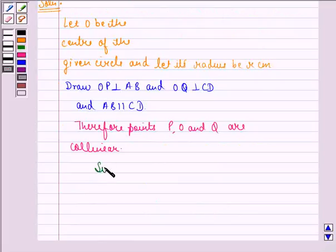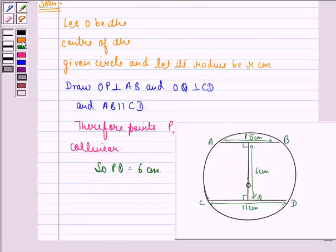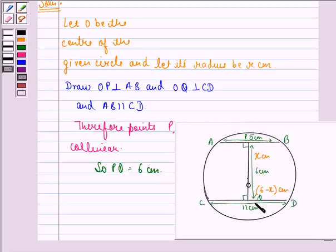PQ is equal to 6 cm. We let OP be equal to X, so OQ becomes 6 minus X cm. Because the entire distance PQ is 6 cm, if OP is X cm then OQ becomes 6 minus X cm. Now we do some construction in this figure — we join O to A and O to C.